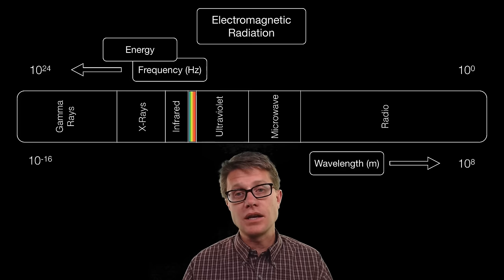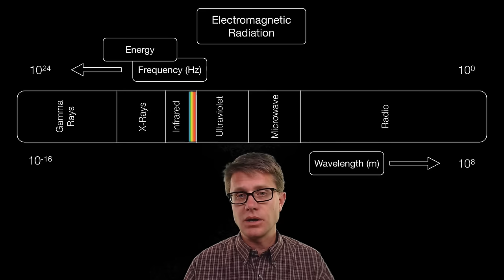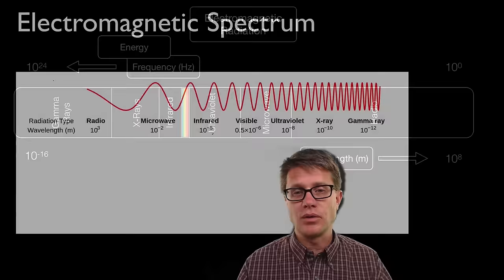Inside this room right now I have visible light, but there are also radio waves here. That's how you could pick up a radio signal or TV signal. I also probably have microwaves in here as well. Hopefully I don't have too many gamma rays in here right now.